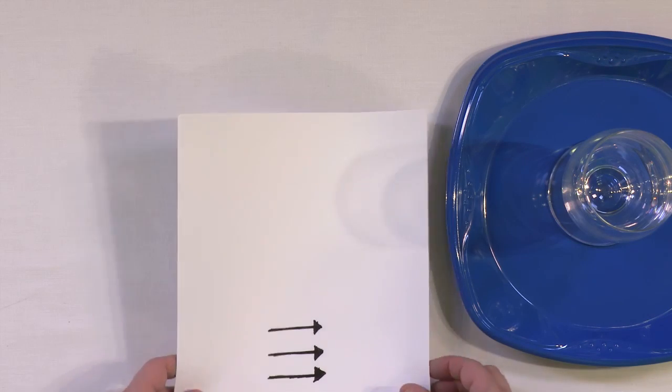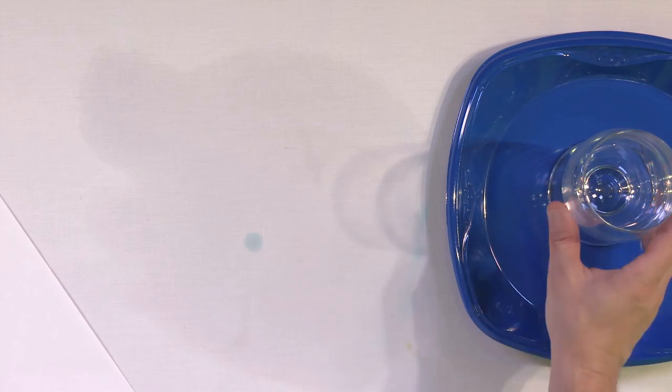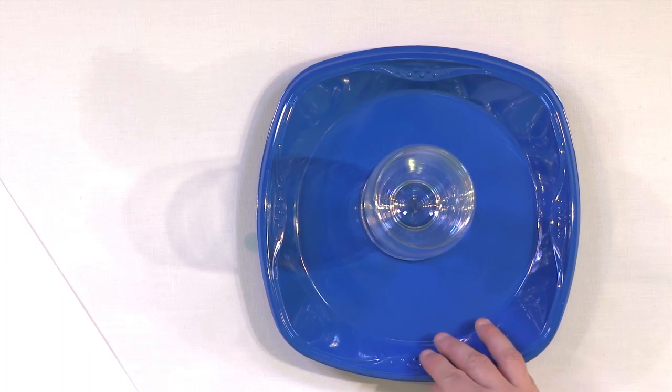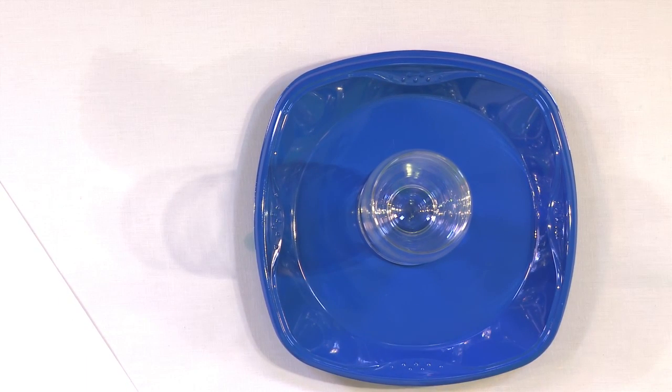So the next thing you want to do is take your sheet of paper and you need to basically set it up where you're looking through a glass. Because what we have is an empty glass here, and what we're going to do is fill this glass with water. So I'm going to put the glass in place, right, like so.